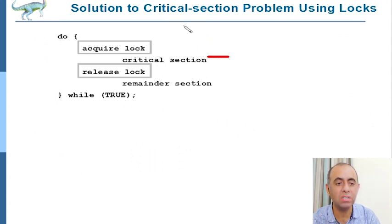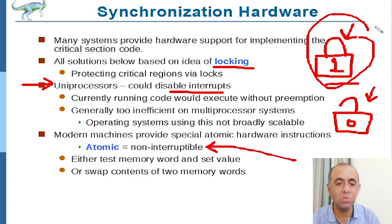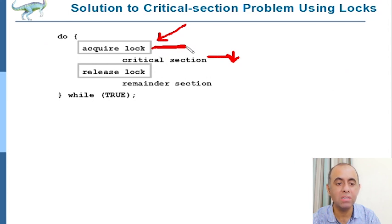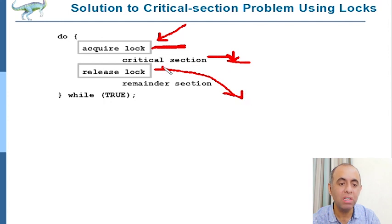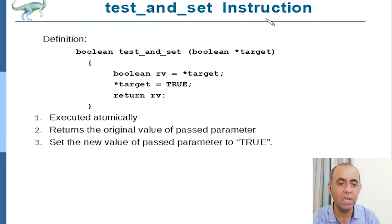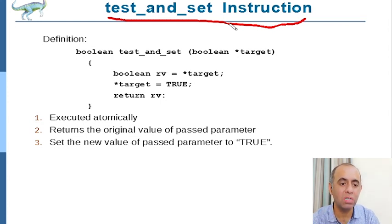Before going into the critical section, we acquire the lock, and as soon as we acquire it we are allowed to enter. If the lock is not available, the process which finds the lock in that state keeps waiting and does not move forward. The process which finds it free acquires the lock, goes into the critical section, and while coming out it releases the lock, letting all other processes know they can now compete to acquire it.